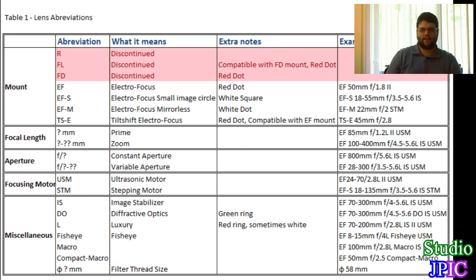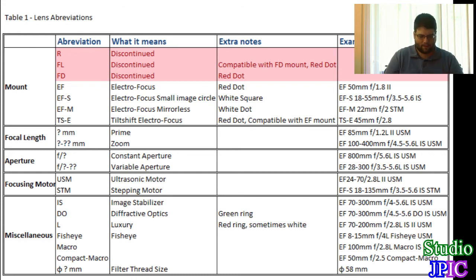You can set smaller apertures such as f/8, f/11, all the way to f/22, and some lenses can go even higher — but the lens name only shows the largest aperture available.